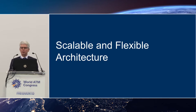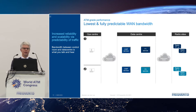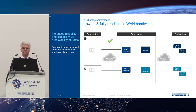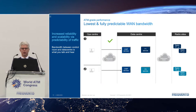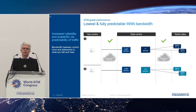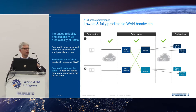An IT system must be scalable and flexible. We make traffic predictable by introducing services where the bandwidth between the control room and the data center is only what you talk and hear — nothing else needs to be transferred. It doesn't matter how many frequencies are on the panel, whether three or 28, the bandwidth is still the same: super predictable. The same goes for the connection to the radio — only one connection is needed between a frequency service and the radio.